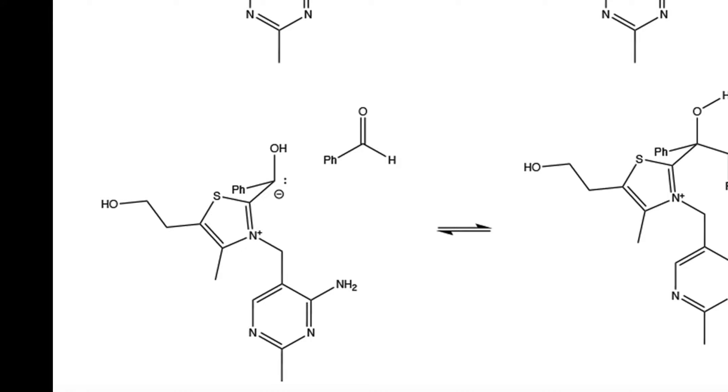Next, we take the carbanion and react it with another mole of benzaldehyde. The electrons on the carbon attack the carbonyl carbon, break the double bond, and the electrons are placed onto this oxygen.